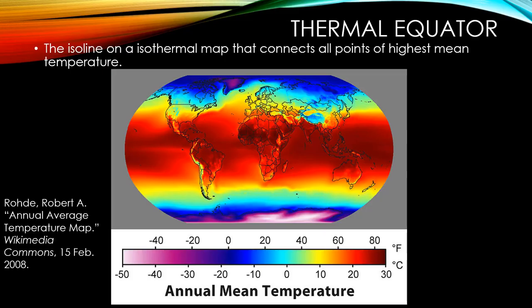The next thing to cover is the thermal equator. The thermal equator is the isoline on the isothermal map that connects all the points of the highest mean temperature. This map gives you the annual mean temperature, and you can see a clear pattern where there are the highest mean temperatures. You're basically looking at the thermal equator being in the same area as our geographic equator, maybe a little bit more north, but it's a very similar pattern.